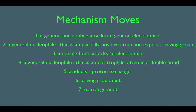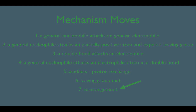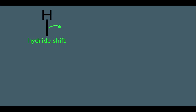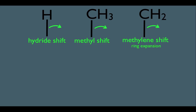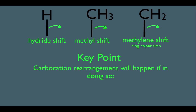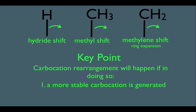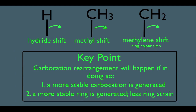In this online lecture, we're going to talk about the last mechanism move we can make here, and that is number seven: rearrangement. Here are our key points. We're going to see that one rearrangement is due to a hydride shift, another from a methyl shift, and the other type is called a methylene shift, or sometimes called a ring expansion. The key point is that carbocation rearrangement will happen if, in doing so, either a more stable carbocation is generated, or a more stable ring is generated with less ring strain.